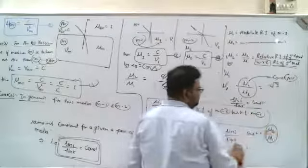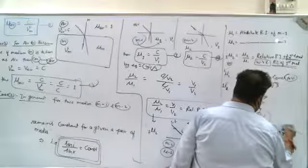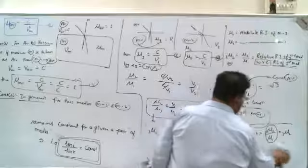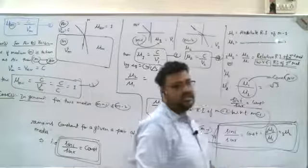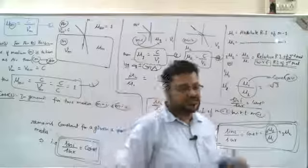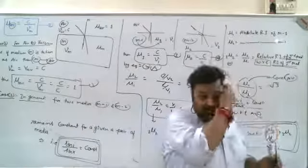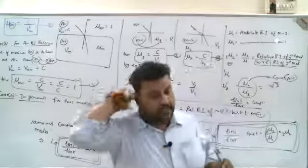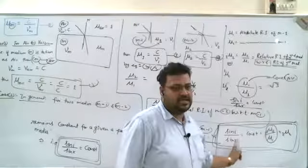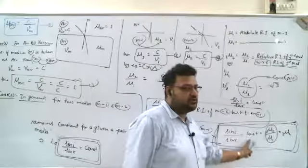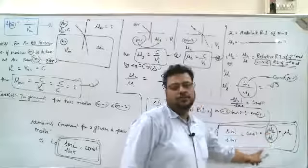mu2 upon mu1, and what do we call it? Relative refractive index of medium 2 with respect to 1. So this means sine i upon sine r equals constant, which represents the relative refractive index of the pair of the medium. As I said, I have to make some modifications. The sine i upon sine r equals constant, and the constant is mu2 upon mu1.